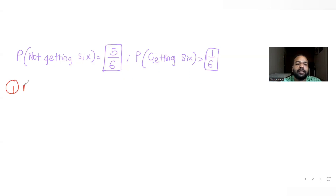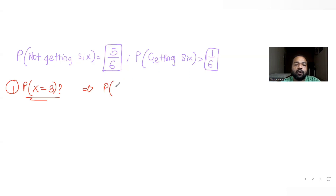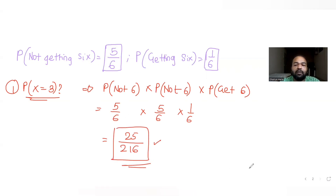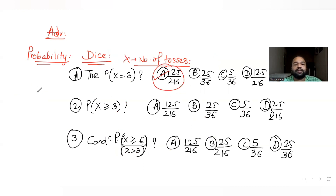For the first question, we need the probability that 3 tosses are required to obtain a 6. In the first toss you won't get a 6, so probability of not getting 6 in the first throw is 5 by 6. Again in the second throw you don't get a 6 — 5 by 6 — and in the third throw you get a 6, so 1 by 6. Multiplying: 5/6 × 5/6 × 1/6 = 25 by 216. So option A, 25 by 216, is the correct answer for the first part.